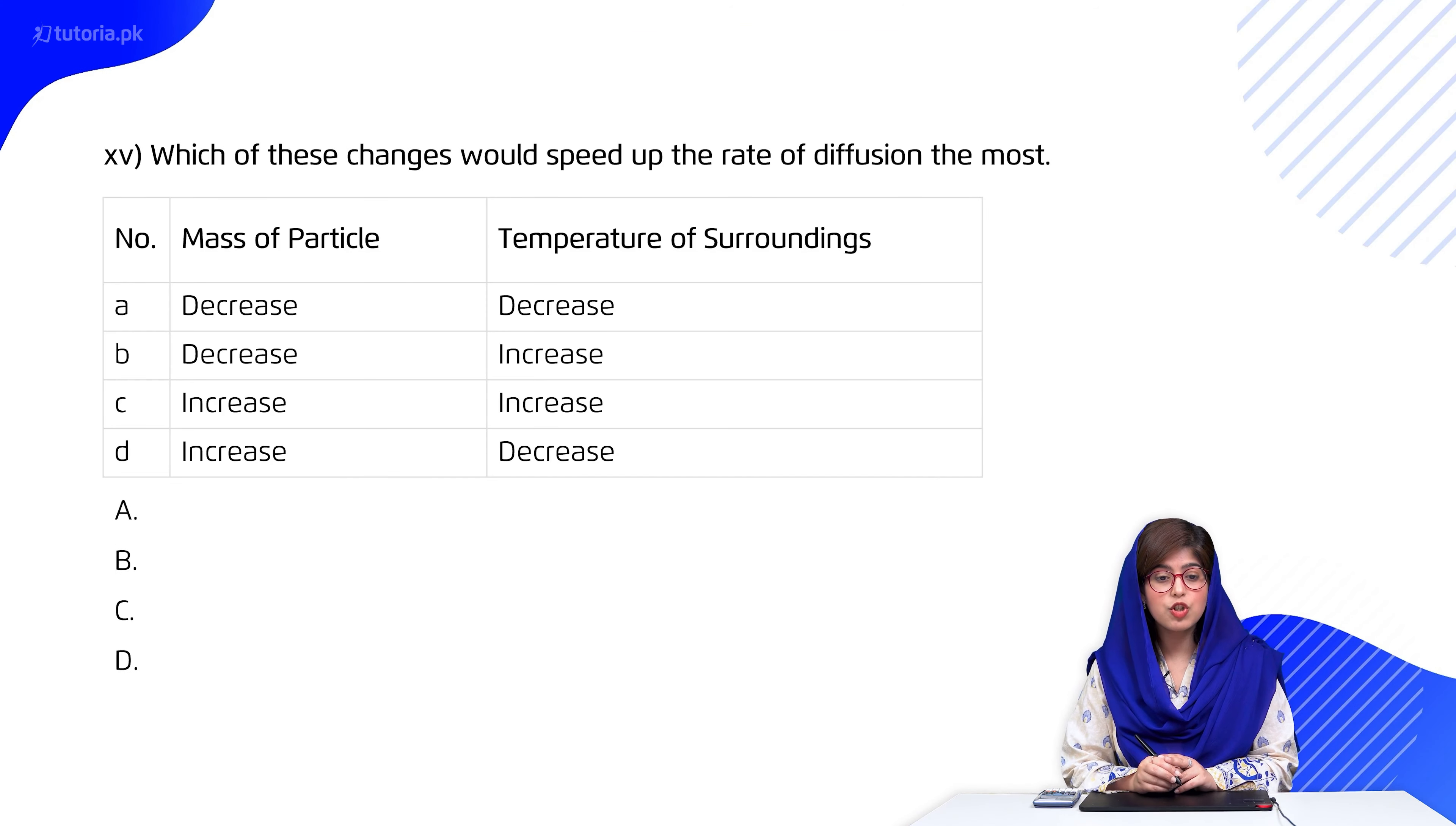Then students, next, which of these changes would speed up the rate of diffusion the most? A is mass of particles decrease and temperature will decrease. Then B is decrease and increase. Then C is mass of particles increase, then temperature of surrounding will increase. Then D is increase and decrease relationship. So students, remember that as much mass will decrease, and if temperature will increase, then the rate of diffusion will increase. So B would be the right one.